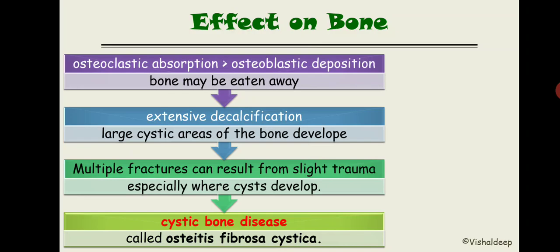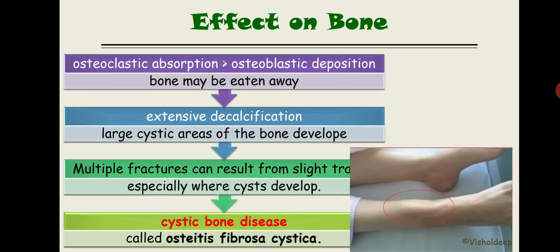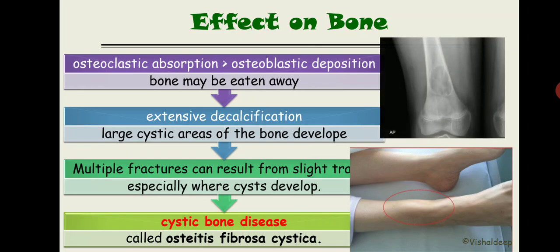The cystic bone disease that develops is called osteitis fibrosa cystica. Radiographically, the tibia or humerus shows cyst formation inside the bone — large radiolucent cystic areas visible on X-ray.